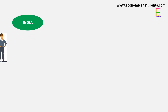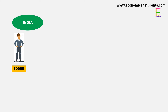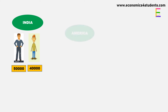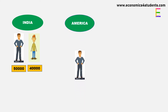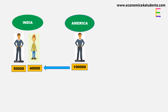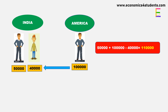Let us take an example. An Indian residing in India is earning Rs. 50,000 within the country, and one American who is not a normal resident of India is earning Rs. 40,000 from India. Then the income of the American will be deducted from the national income of India. On the other hand, an Indian residing in America is earning Rs. 1 lakh and sending it to India — it will be added to our national income. So national income of India will be 50,000 plus 1 lakh minus 40,000, which equals Rs. 1 lakh 10,000.